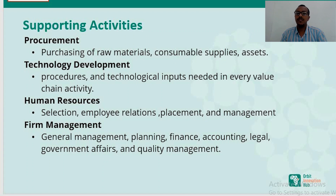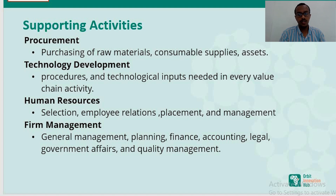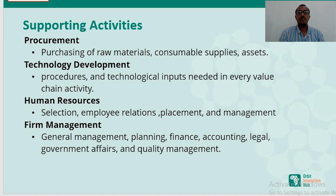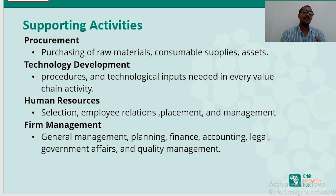The supporting activities are procurement, technology development, human resources, and firm management. In procurement, a company must understand how purchasing of raw materials and consumable supplies creates value — for example, a car production company purchasing tires, engine parts, or other car components. Technology development applies to procedures, technologies, and inputs needed to add value, such as using technologically advanced materials, equipment, and methodologies to ensure efficient production of goods.